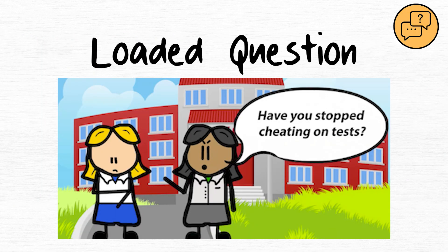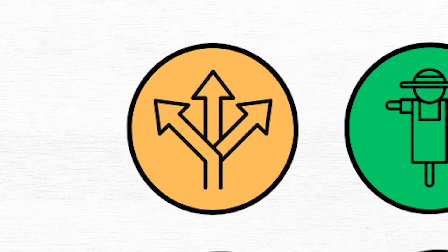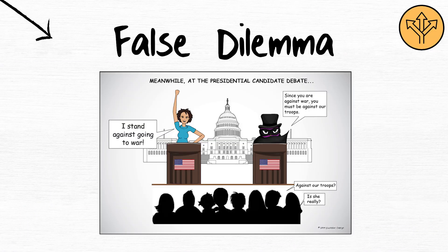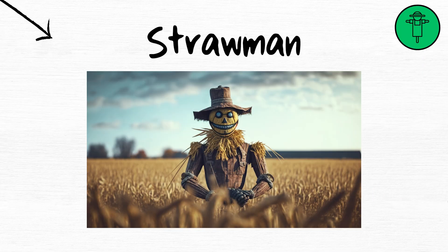Loaded question. Loaded questions contain assumptions within them. False dilemma. False dilemmas present only two options when more exist. Straw man. Straw man arguments misrepresent the opponent's position.